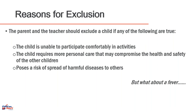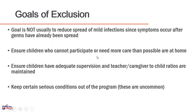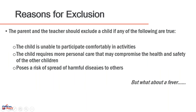Reasons for exclusion: the parent and teacher should exclude if any of the following are true. The child is unable to participate comfortably in activities — this is huge. The child requires more personal care than may compromise the health and safety of other children, thinking about staff-to-child ratios. Or the child poses a risk of spreading harmful disease to others. If any of these are true, the child may be excluded. Policy is your friend.